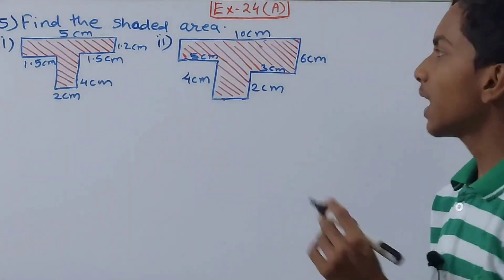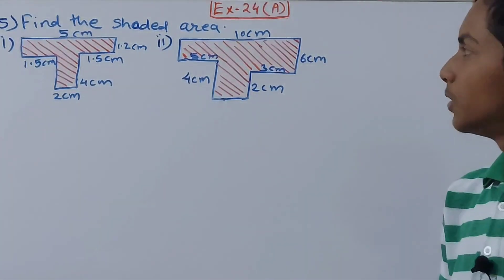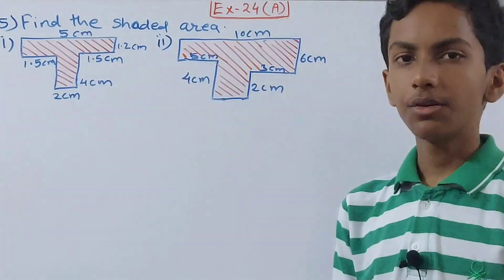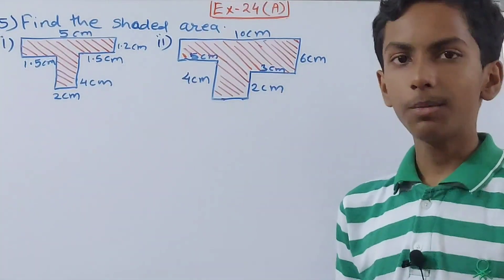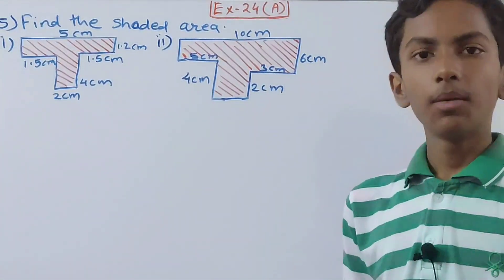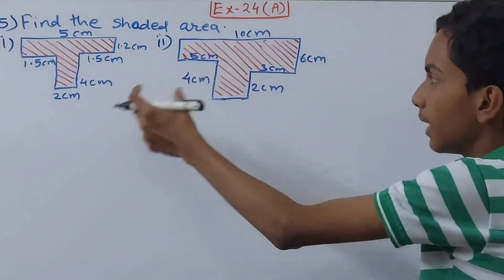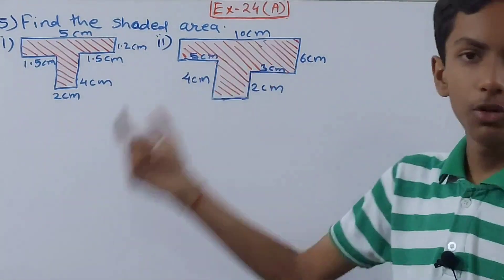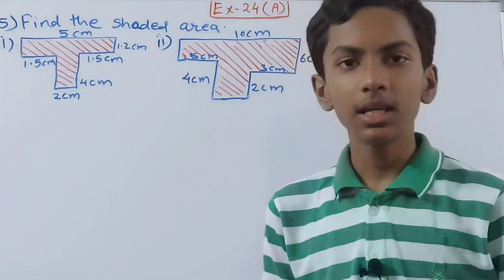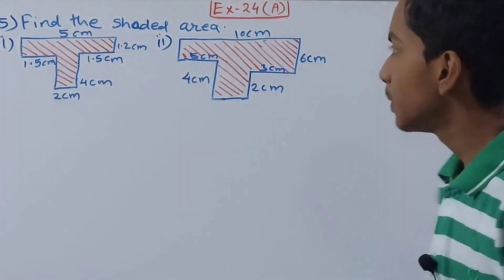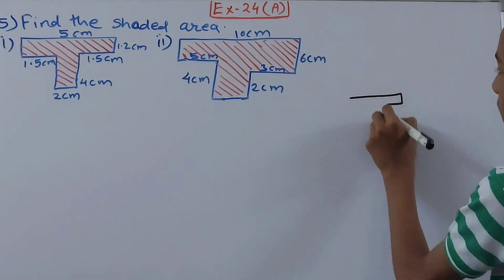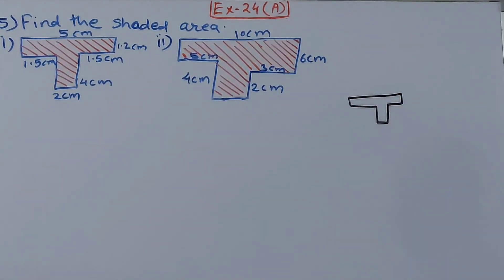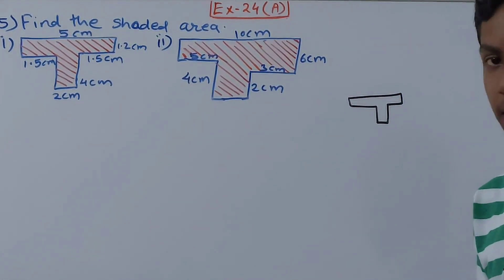Two figures are given to us and we have to find their area. You can see that we cannot say whether they are a square, rectangle, triangle, or something like that. We cannot give a proper name to these shapes — they are basically not regular shapes. So we cannot use a formula for finding the area of these shapes directly.